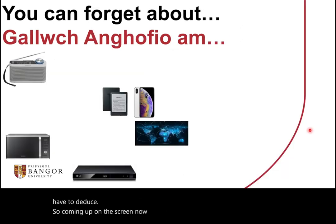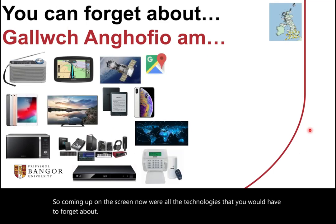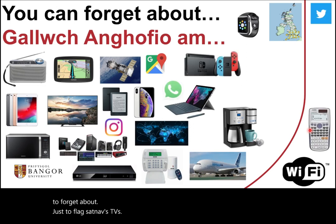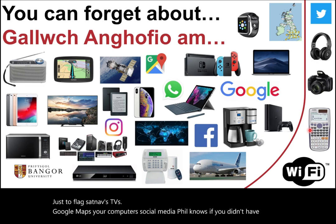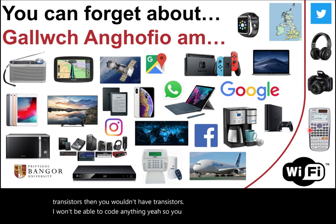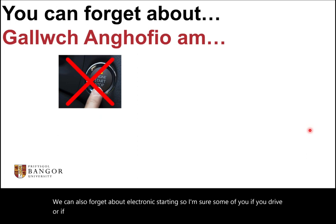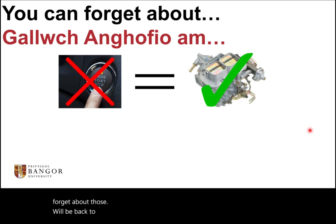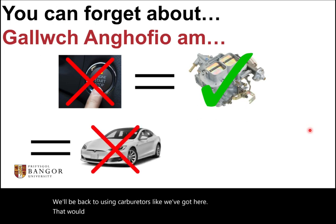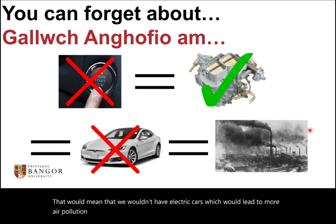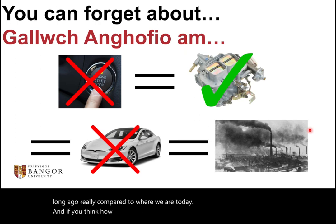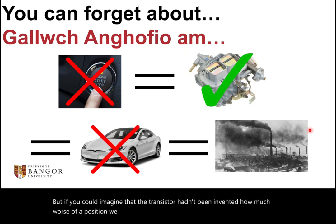Coming up on the screen are all the technologies you would have to forget about: satnavs, TVs, Google Maps, computers, social media — none of it would be possible without transistors. We can also forget about electronic starting in cars; if you've got an electronic start button, you can forget about that. We'd be back to using carburettors, which means no electric cars, leading to more air pollution. That photo is actually from 1920s London, and if you think how much better air pollution is today compared to then — if the transistor hadn't been invented, we'd be in a much worse position.